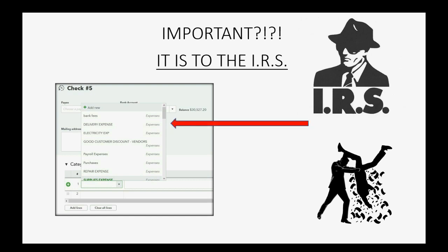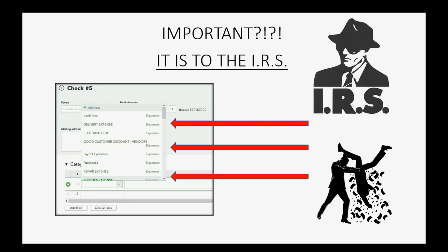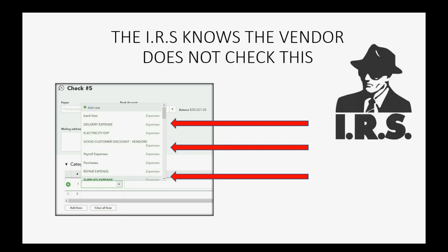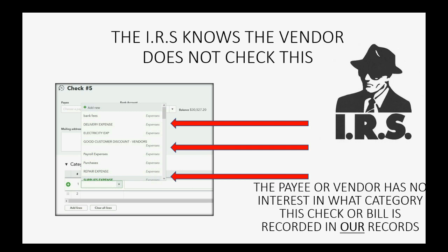This is very important to the IRS, because you have to give a clear explanation of every category of every expense, check, or bill you recorded so the IRS can determine if it is deductible from your taxes. The IRS also knows that the vendor is not checking which account classification you put for the check or bill payment — the payee or vendor has no interest in what category it's recorded in your records.